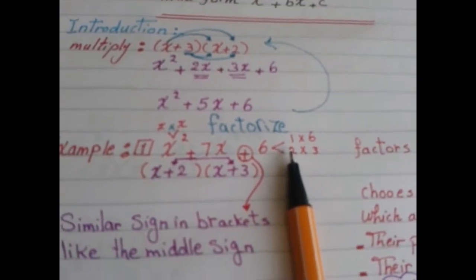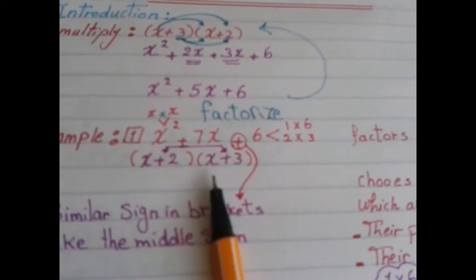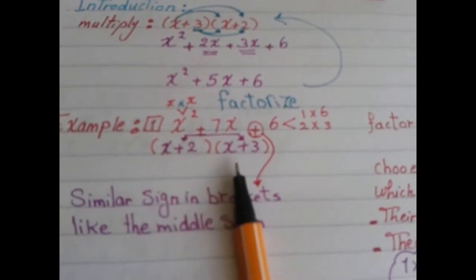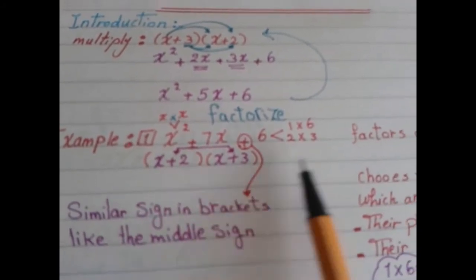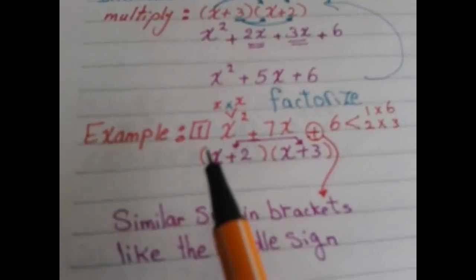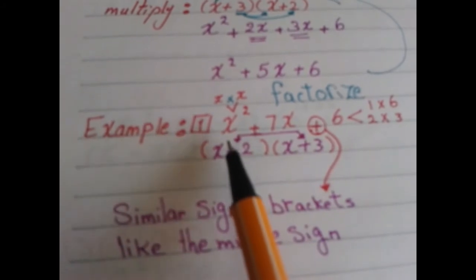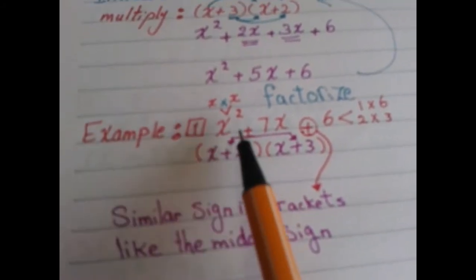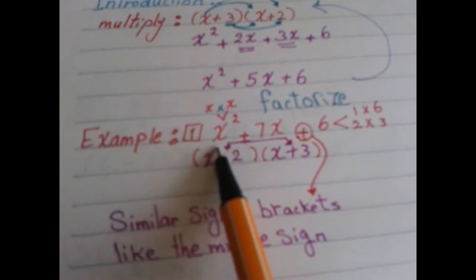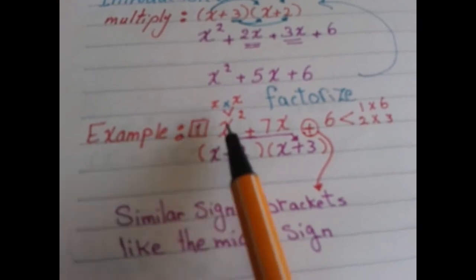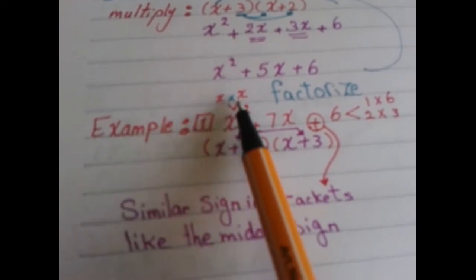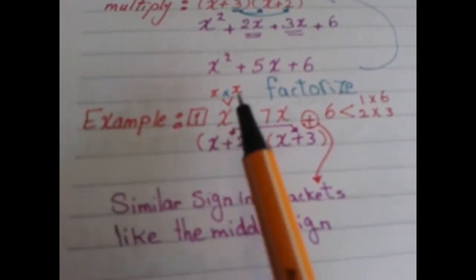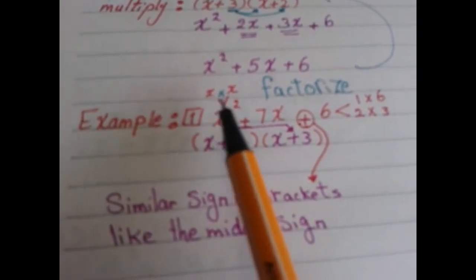First of all, open two brackets. Think about the first term, which is x squared. What are the two factors that give me x squared? x times x. There are no other factors that give x squared except x times x.